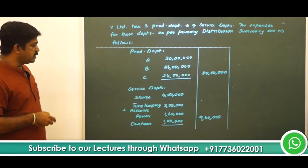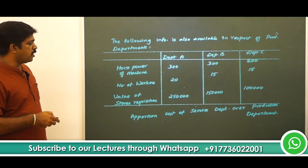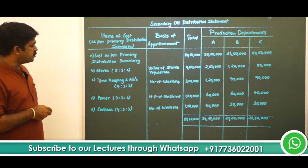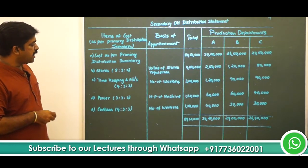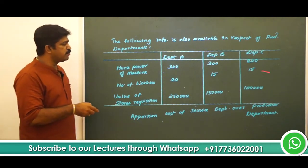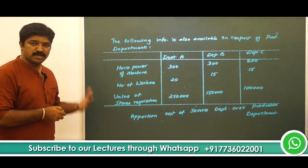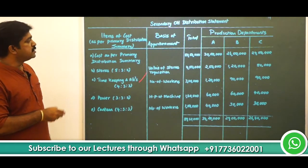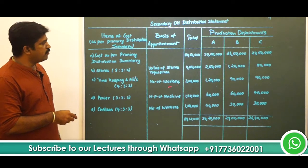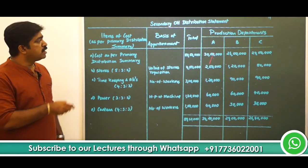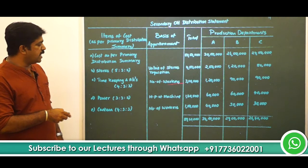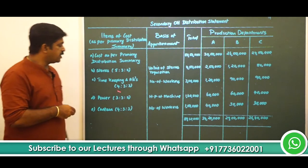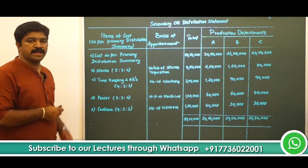The second item is timekeeping and accounts. Timekeeping and accounts will be apportioned on the basis of number of workers. The ratio is 20:15:15, which can be further reduced to 4:3:3. The basis of apportionment is number of workers and the total amount is 3 lakh. So, 3 lakh divided by 10, multiplied by 4, gives 1,20,000. Multiplied by 3 gives 90,000 and 90,000 respectively.